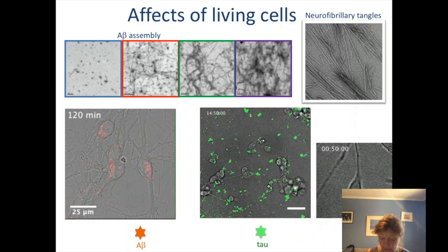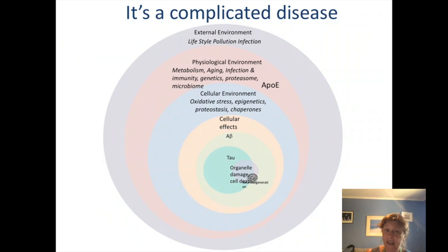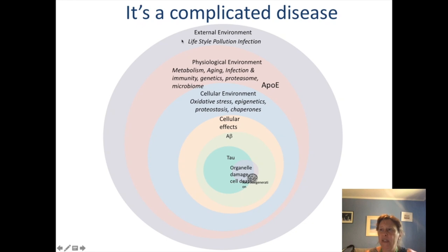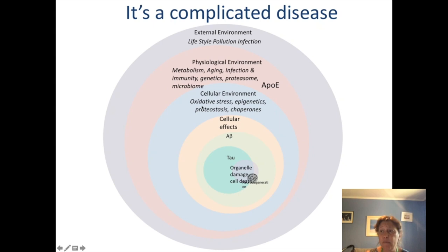This is a really complicated disease — I mentioned that right at the beginning when I called this 'Untangling.' We need to think about what's happening in the external environment: lifestyle, pollution, infection, and so on. We also consider what's happening in our physiological environment — our genetics, immunity, aging. And then we can think about the cellular environment: epigenetics and the way proteins manage themselves, known as proteostasis. We can also zoom in even more into the effects of amyloid beta, the effects of tau, and what happens in terms of neurodegeneration.